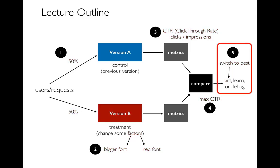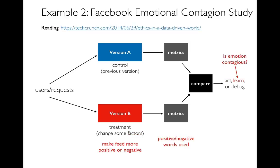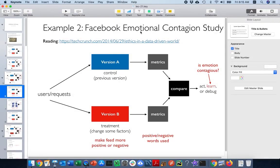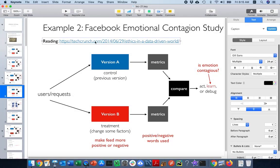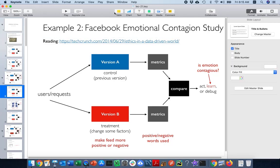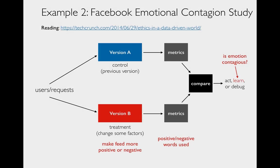That was an example of how you could take an action. Sometimes people do A/B testing just for the sake of learning something. This is actually in the article cited for the reading today — there's a link to a TechCrunch article from 2014 on the course website, so go read it and maybe we'll get a discussion going on Piazza.